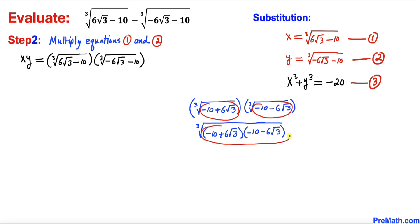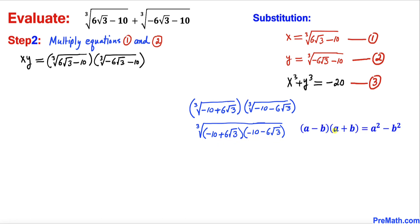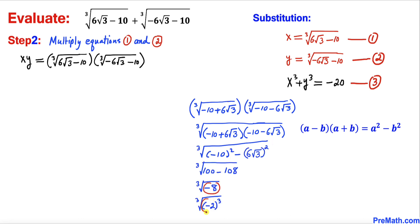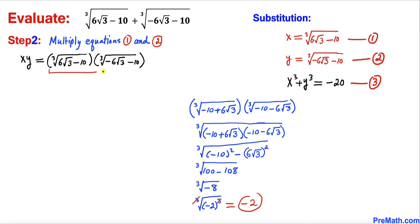Using the difference of squares identity, the expression under the cube root simplifies to (6√3)² − 10², giving 108 − 100 = 8 ... wait, it becomes −8, which equals −2³. The cube root and the cube power undo each other, so we get xy = −2. We call this equation 4.